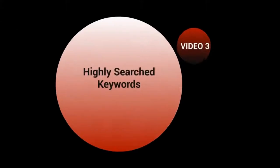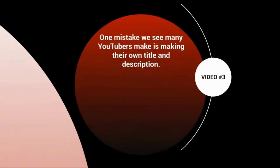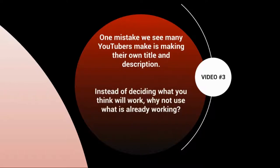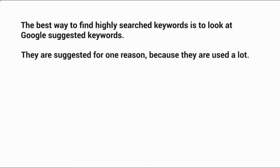Hello and welcome to video number three. Let's talk about highly searched keyword terms and how you can figure out what your main keyword and sub keywords are going to be. One mistake many YouTubers make is simply making their own title and description based on what they think will work. Instead, use what is already working by doing keyword research. The best way to find highly searched keyword terms is to look at Google's suggested keywords — they're suggested for one reason: because they are used a lot.